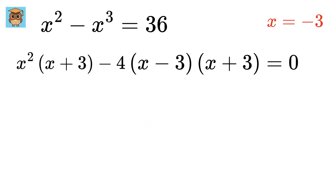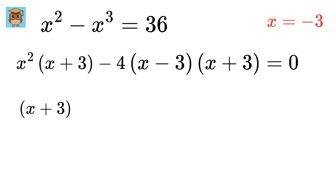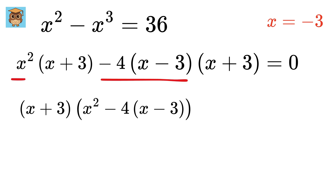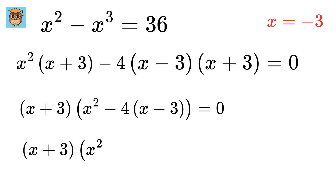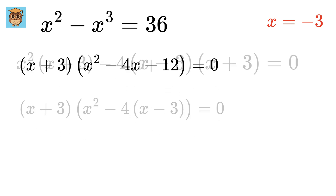So far so good. Now take x plus 3 common from both terms to get x plus 3 times x squared minus 4x minus 3 equals 0. Or equivalently, x plus 3 times x squared minus 4x plus 12 equals 0.